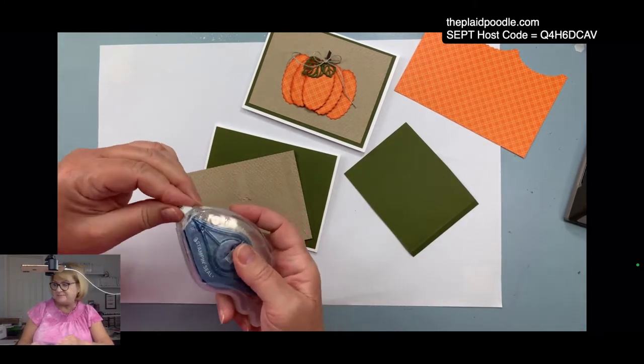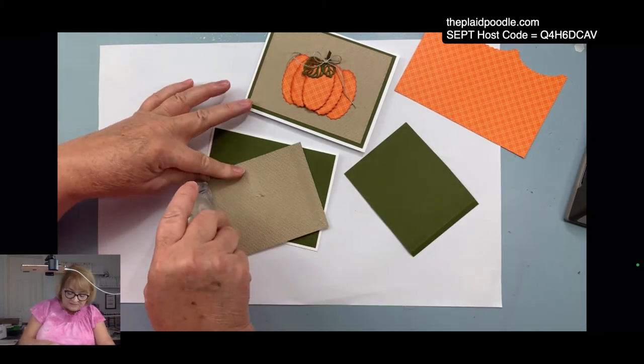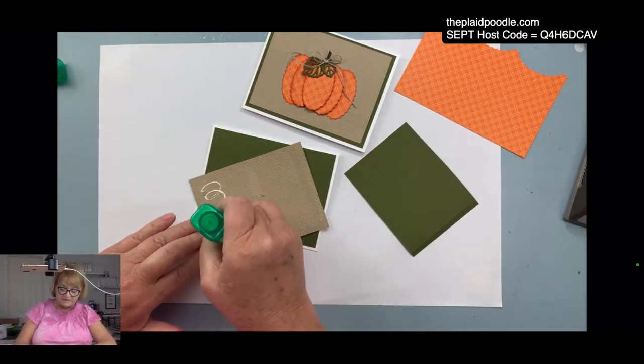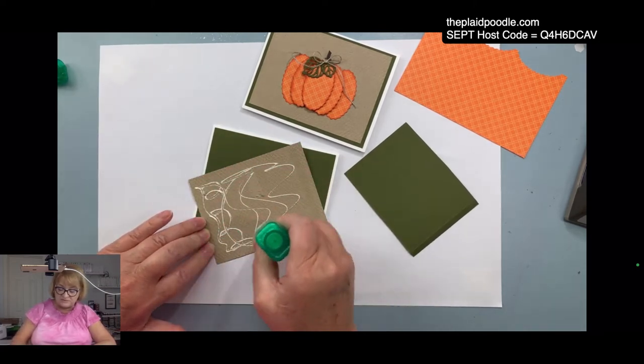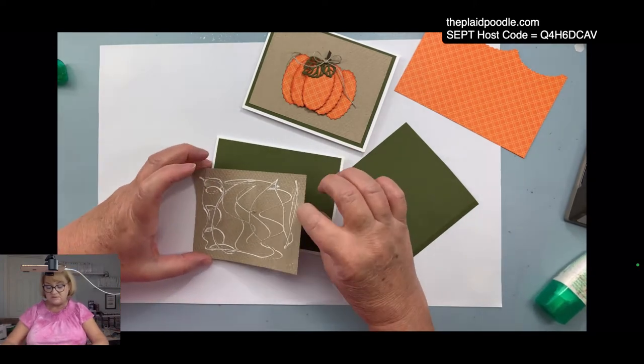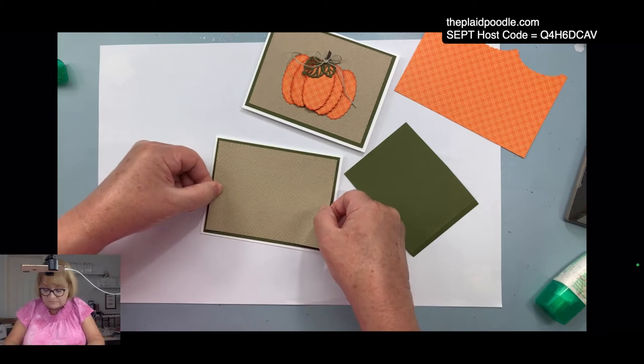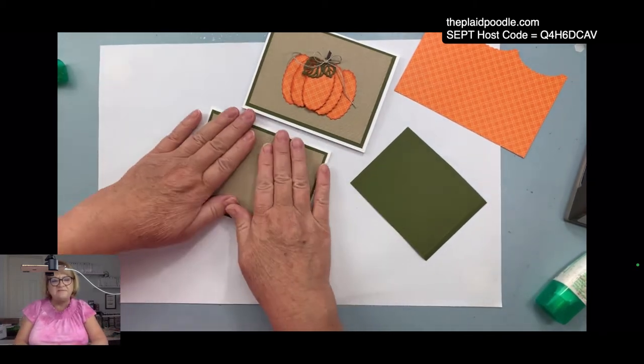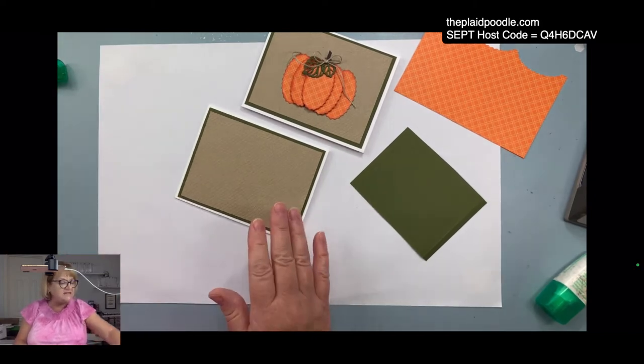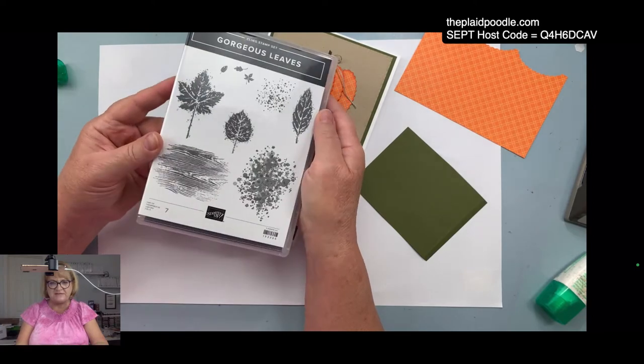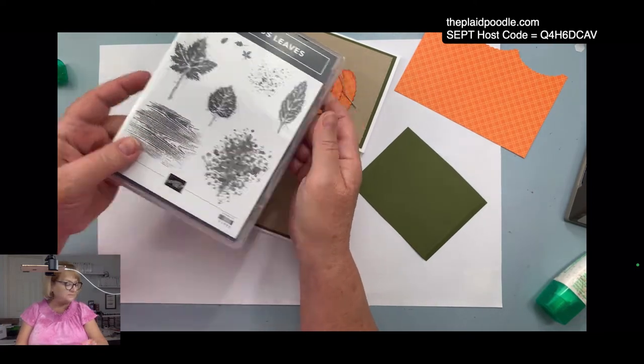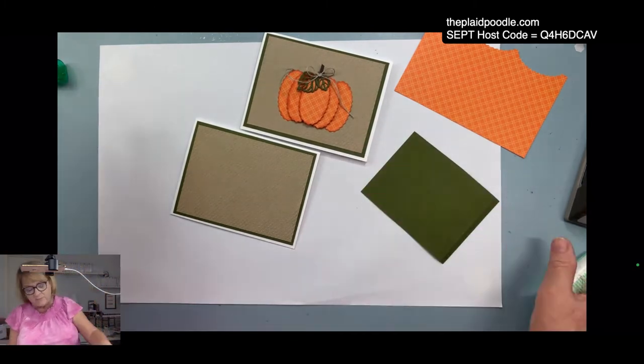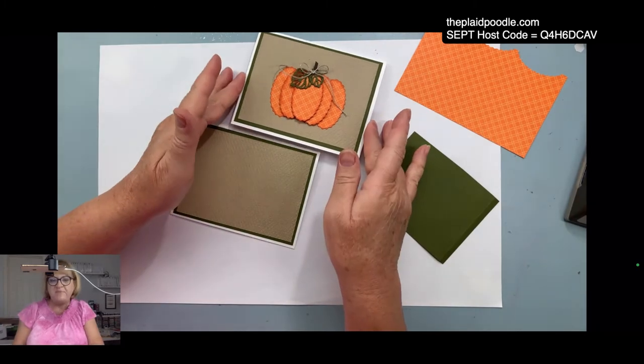We're going to adhere that to the card front. This stamp and seal plus is almost too strong sometimes, so I'm going to use some liquid glue here. That's my second layer. You see the texture on that? Kay loves the fall colors and Donna is loving that set. I love this gorgeous leaves set, it is so pretty and very classic and something that'll be around forever.